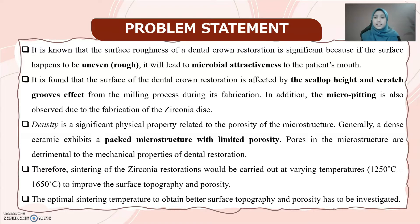Micro-pitting is also observed due to the fabrication of the zirconia disc. Meanwhile, density is a significant physical property that is related to the porosity of the microstructure. Generally, a dense ceramic exhibits a packed microstructure with limited porosity. Pores in the microstructure are detrimental to the mechanical properties of the dental restoration. Therefore, sintering of the zirconia disc will be carried out at varying temperatures from 1250 to 1650 degrees Celsius to improve the surface topography and porosity. The optimal sintering temperature to obtain better surface topography and porosity has to be investigated.